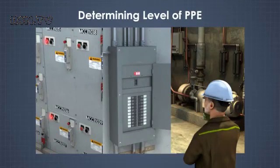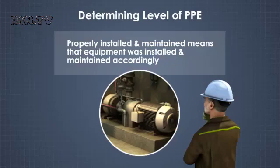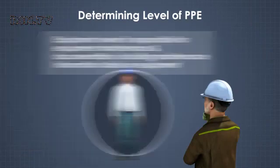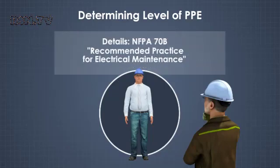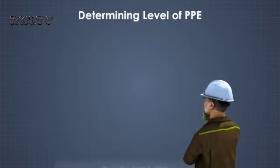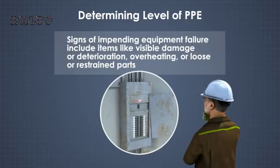When determining the level of PPE for working around electrical equipment, NFPA 70E provides the following definitions. Properly installed and maintained means that the equipment was installed and maintained according to industry codes and standards, and the manufacturer's recommendations. The equipment owner is responsible for equipment maintenance and documentation, including maintenance information labels on the equipment. Details on this can be obtained from NFPA 70B, Recommended Practice for Electrical Maintenance. Signs of impending equipment failure include items like visible damage or deterioration, overheating, or loose or restrained parts.